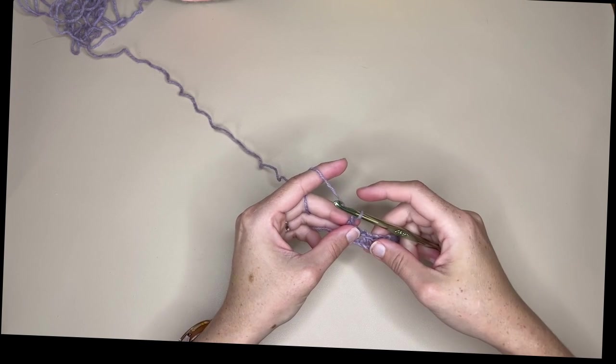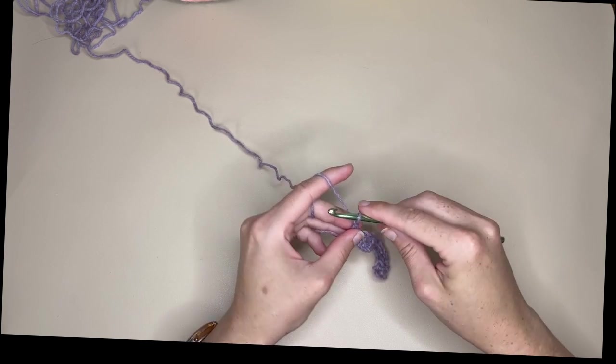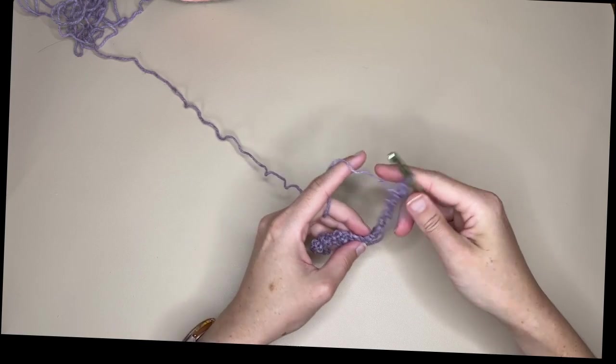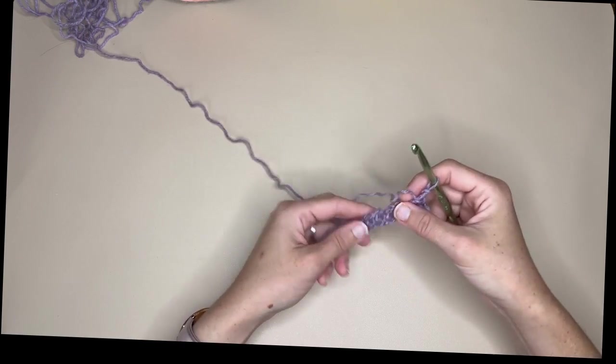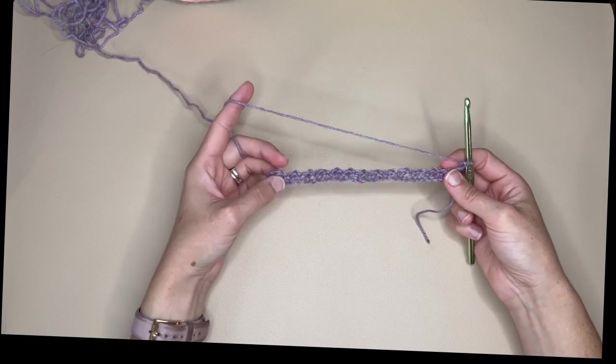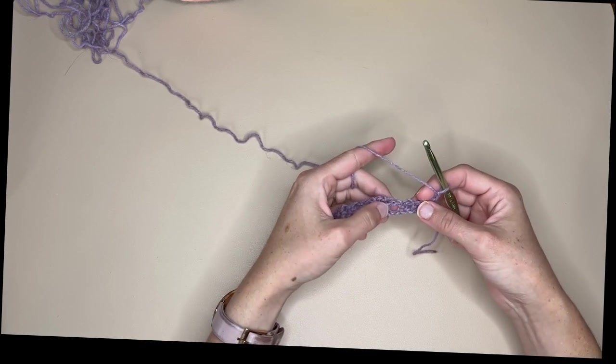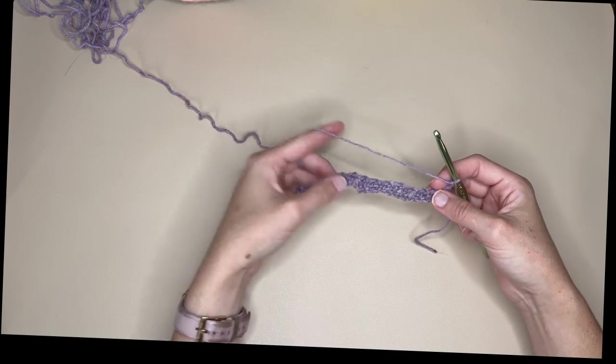Okay so once you get to the end we're going to chain one, turn our work over, and so now our second row and every row beyond that is going to be working into these spaces between the single crochets.